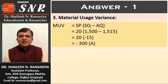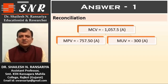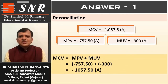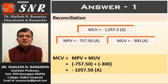Now we will make reconciliation of this variance. MCV is minus 1057.5, which is divided into two parts: MPV 757.5 adverse and MUV minus 300, which means adverse. So, MPV plus MUV equals MCV. So, 757.5 plus 300 equals minus 1057.5 adverse. In this way, we can make reconciliation of variances.